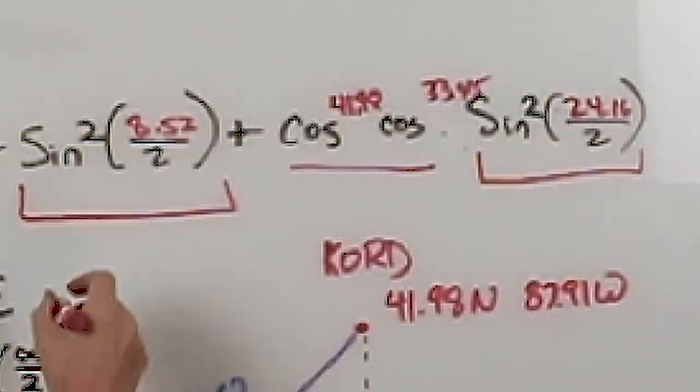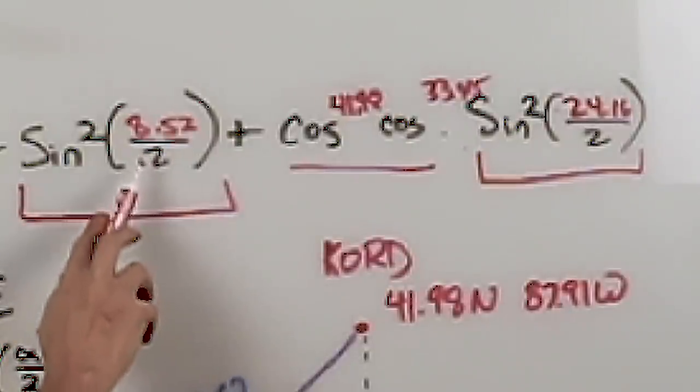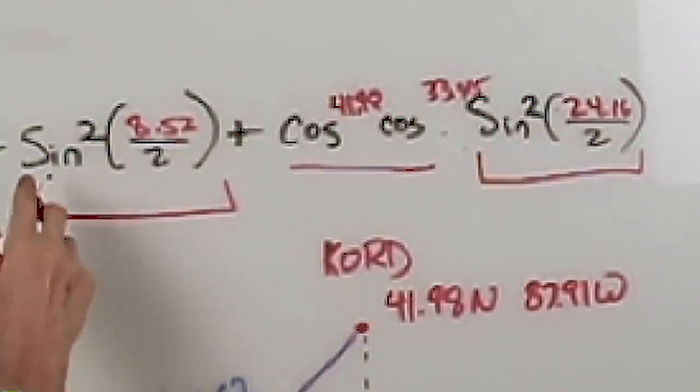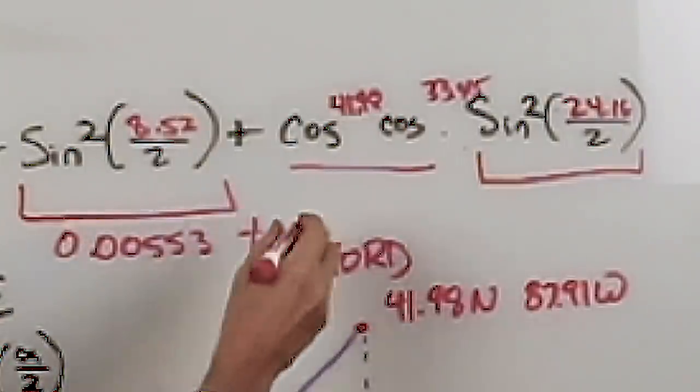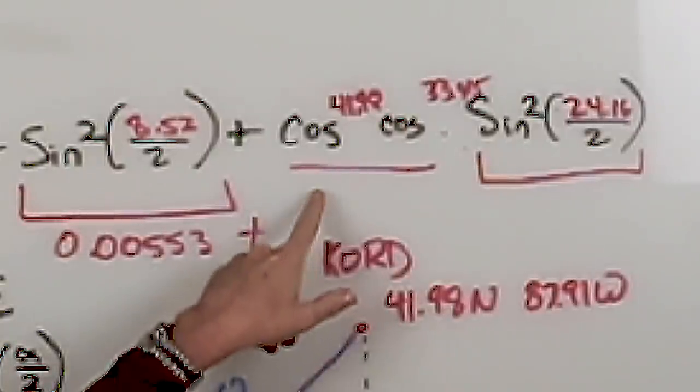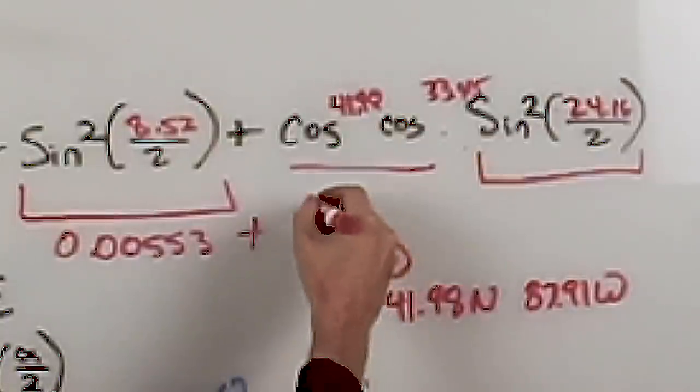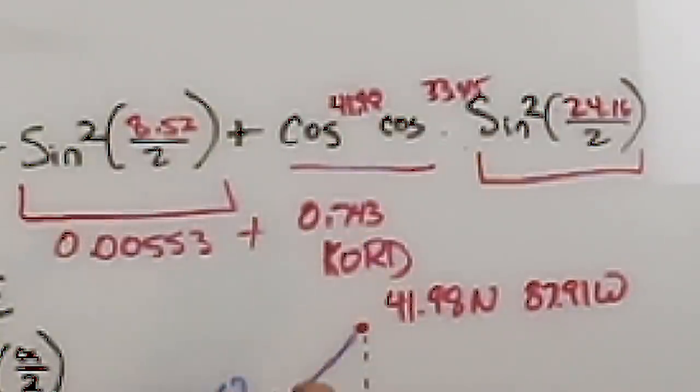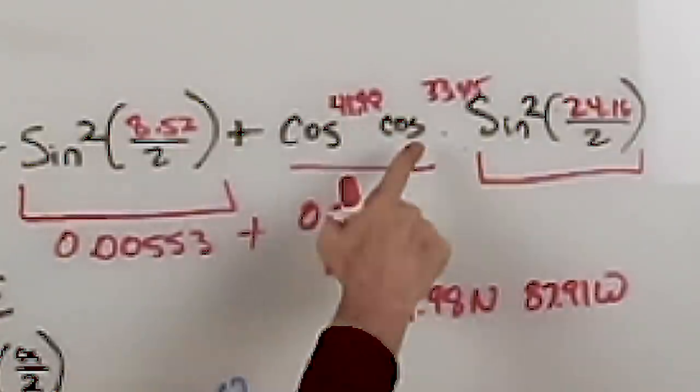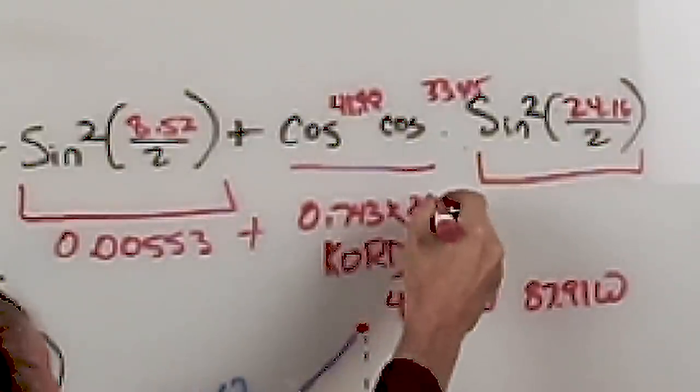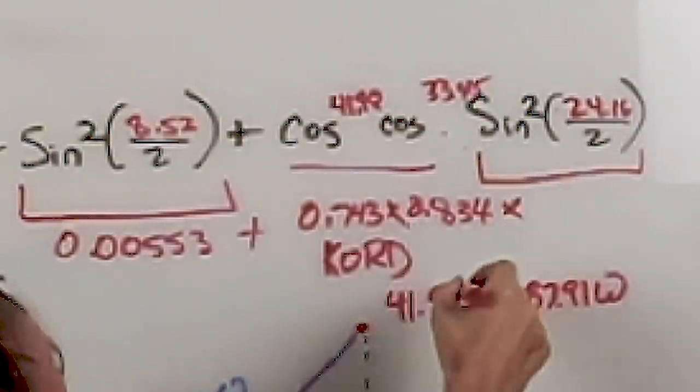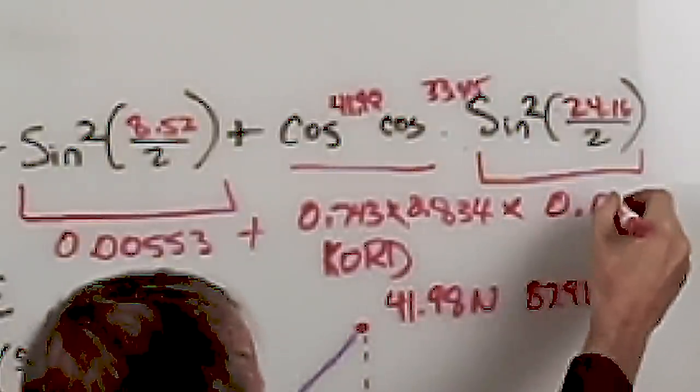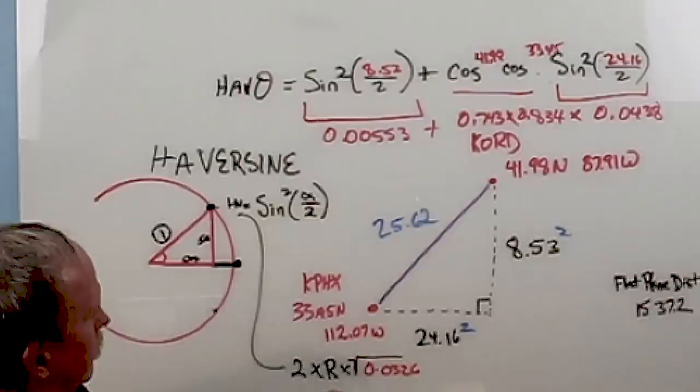Well, this term right here, if you take the sine of half of 8.53 and square it, you're going to get 0.00553. To that, we're going to add the cosine of 41.98, which is 0.743, times the cosine of 33.45, which is 0.834, times the haversine, which is going to be 0.0438. Now, if we bring this all together, we come up with 0.0326. We take the square root of that, we multiply it by 2, and the radius of the Earth in nautical miles, which is 3440.